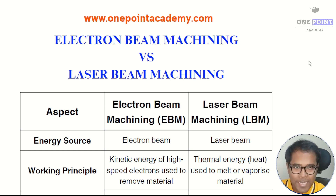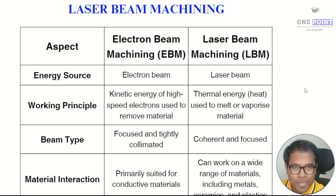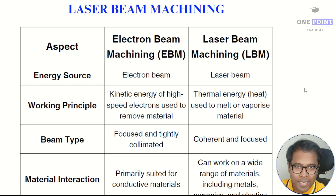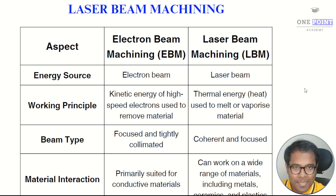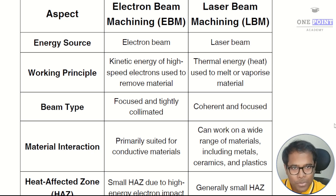The first difference is the energy source. In electron beam machining the energy source is an electron beam, and in laser beam machining it is a laser beam. Second is the working principle: in electron beam machining, high kinetic energy electrons strike the workpiece and cause material removal, whereas in laser beam machining the laser impacts the surface creating instantaneous heat.